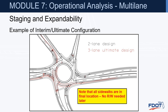Another more complicated example: a five-leg design where the two-lane design is shown in black and the three-lane ultimate design is shown as well. All sidewalks are in their final location, so no additional right-of-way is needed later and adjoining properties won't need to be impacted again during future construction.